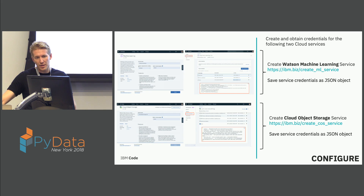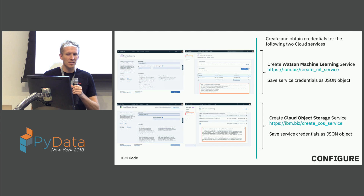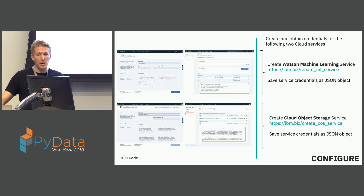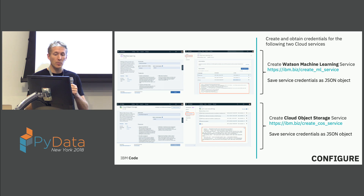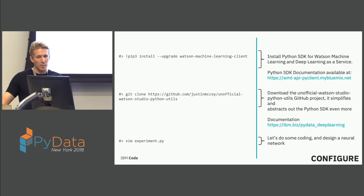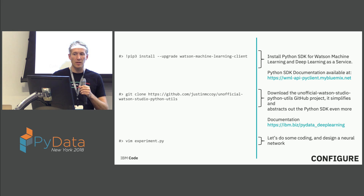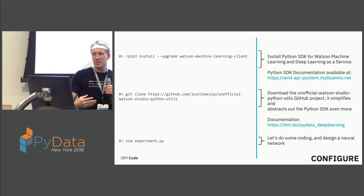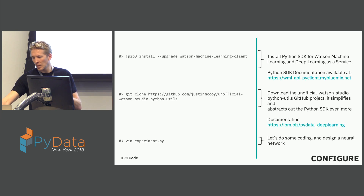Looking at some code — I'll post the presentation online, and you can also follow the links shared at the beginning. You need to create two services: the machine learning service, and cloud object storage where all training data and results from experiments and training runs are stored. I'm using IBM's cloud object storage, but you could just as easily use S3. The Python library is Watson Machine Learning Client — an SDK for the machine learning service.